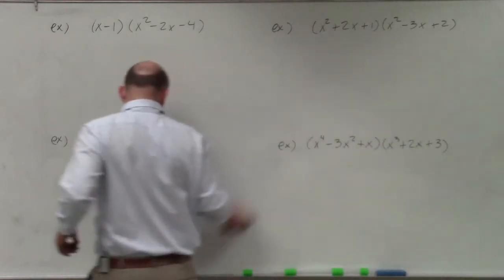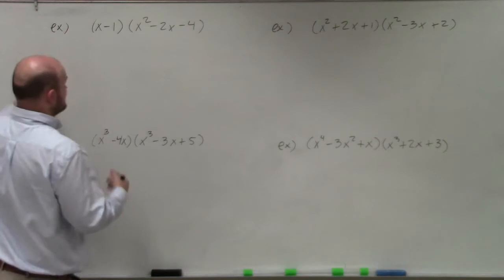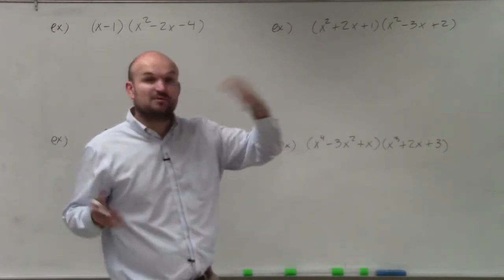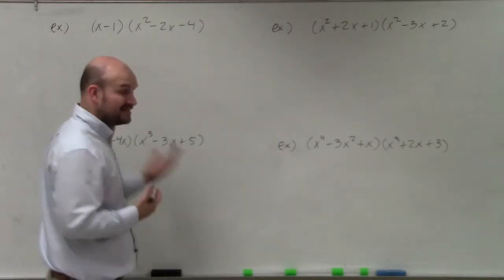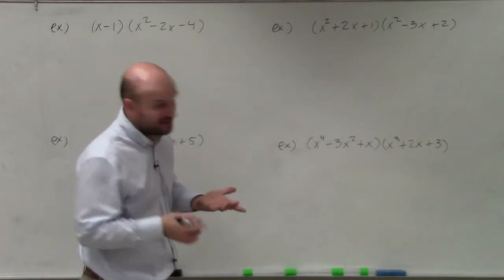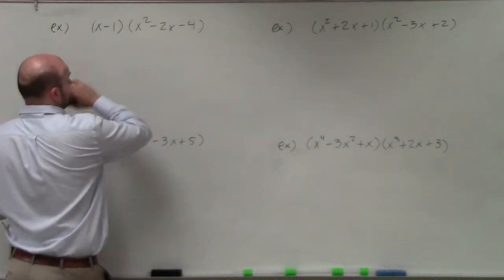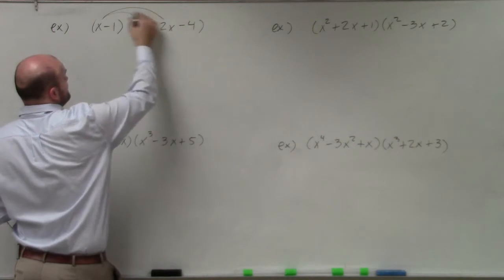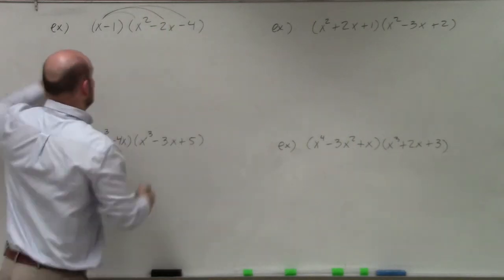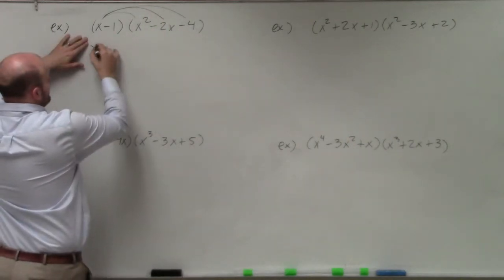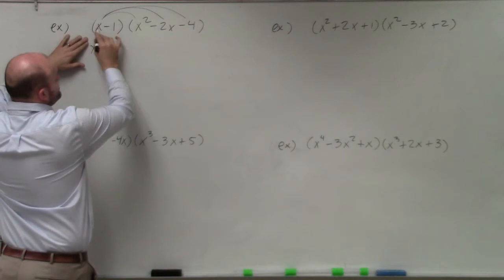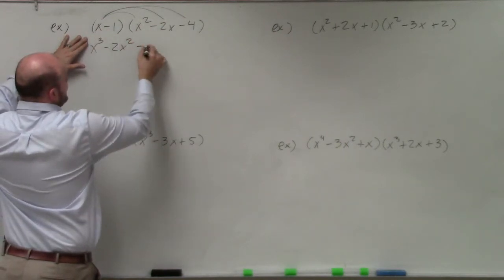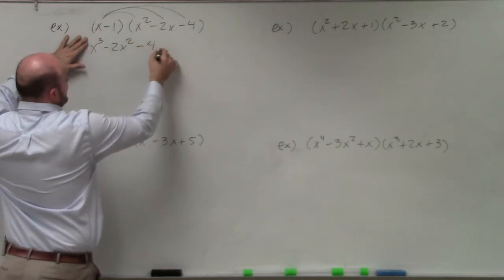I'm going to demonstrate two different methods — the vertical method and the box method — and you can decide which you prefer. Using the vertical method, I multiply one term times every single term and list those products. So x times x² is x³, x times -2x is -2x², and x times -4 is -4x.